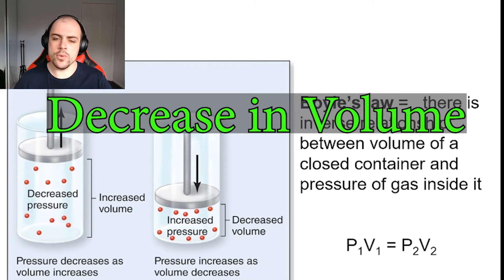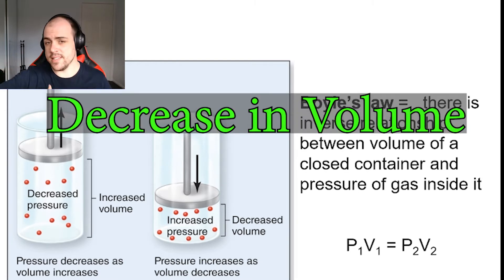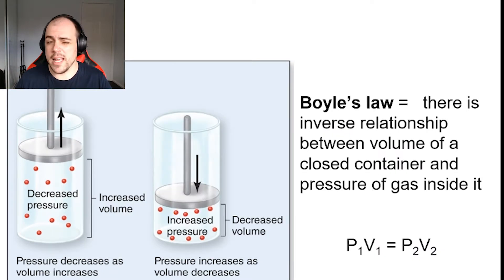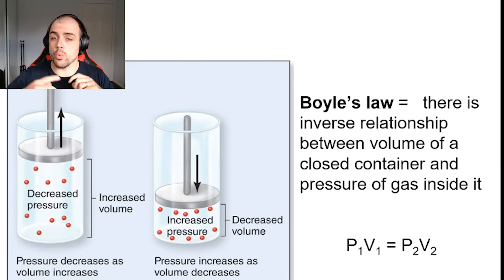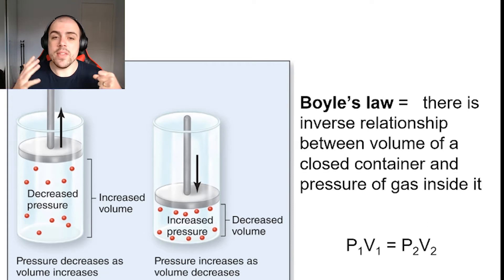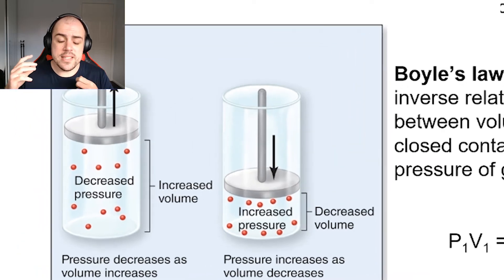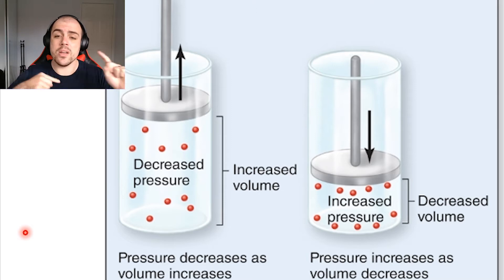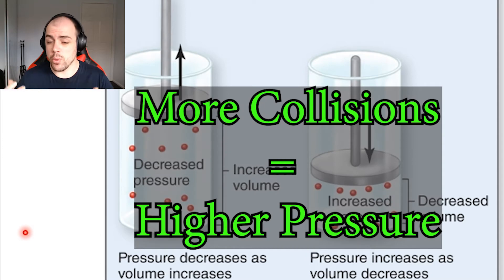If the volume of a container decreases, then the pressure will increase. The reason for this is due to molecular kinetic theory. Gas molecules are constantly moving and bouncing around randomly, colliding with the walls of the container. Looking at our example image, we have small balls bouncing around in an enclosed container. If we decrease that volume, those balls are going to be hitting the container more frequently — and that in essence is pressure.